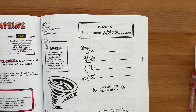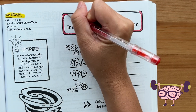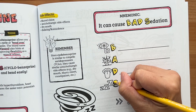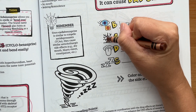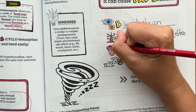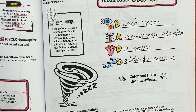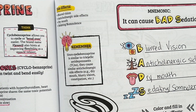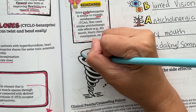Moving on to side effects. Use the mnemonic BAD SEDATION to remember the side effects, since cyclobenzaprine can cause bad sedation — as you can see here in this image of the cyclone sleeping. B stands for blurred vision, A is for anticholinergic side effects, D stands for dry mouth, and S stands for sedation or somnolence. Since cyclobenzaprine is similar to TCAs, they can cause similar anticholinergic side effects such as dry mouth, blurry vision, and constipation.